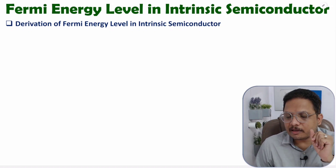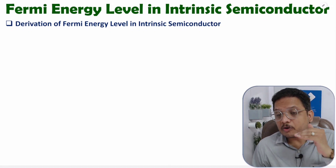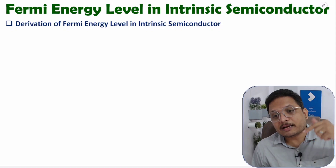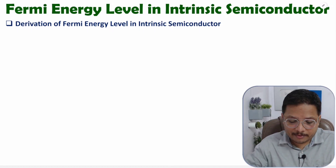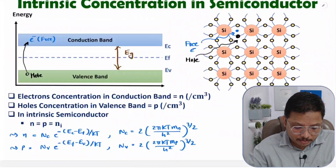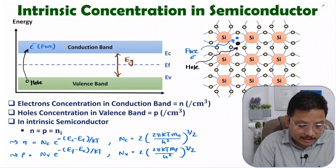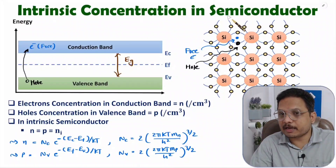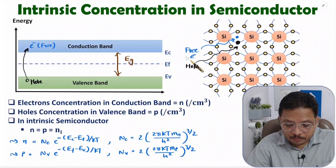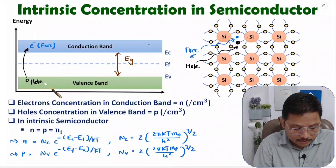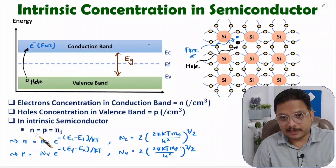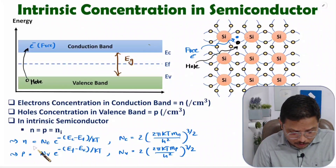In intrinsic semiconductor material, if you talk about the concentration of electrons in the conduction band and concentration of holes in the valence band, those are equal. In my last video I explained that — we saw the intrinsic concentration in semiconductor. The concentration of free electrons in the conduction band and the concentration of holes in the valence band remains the same.